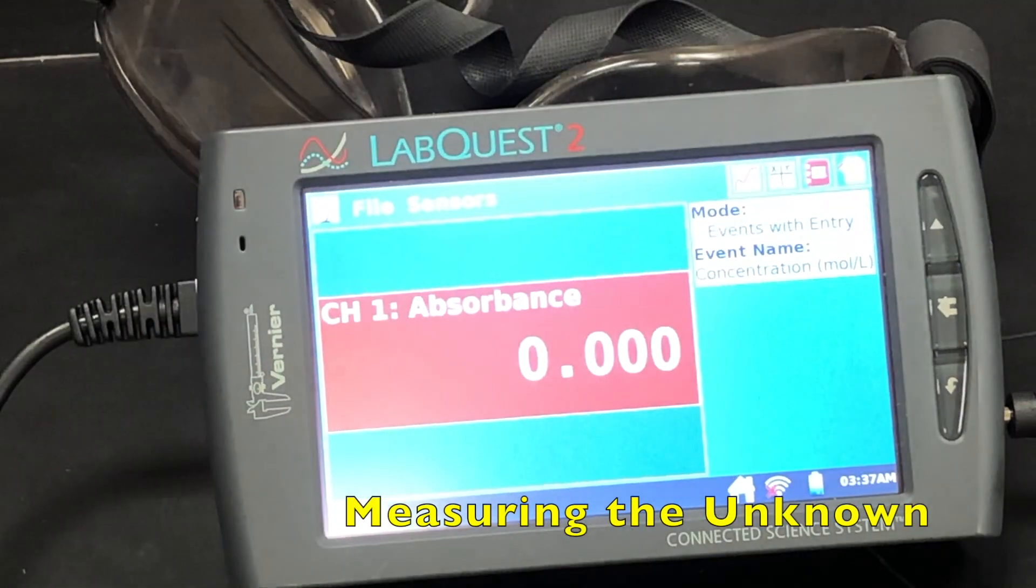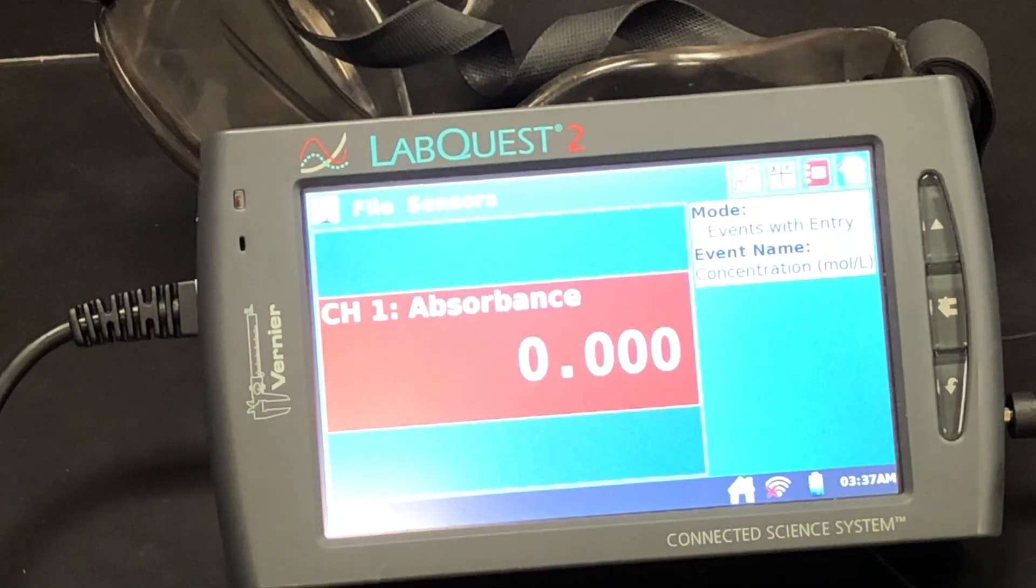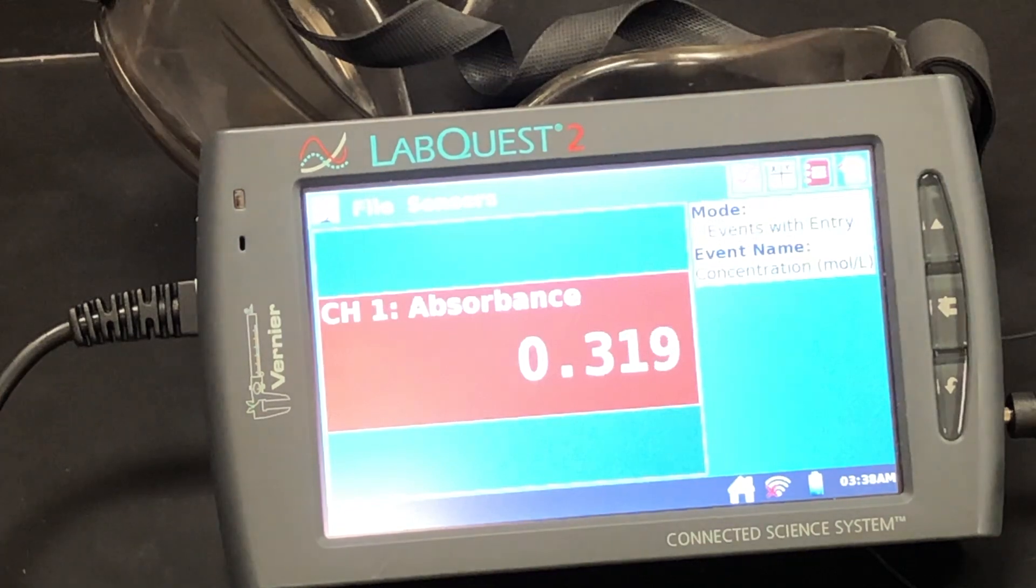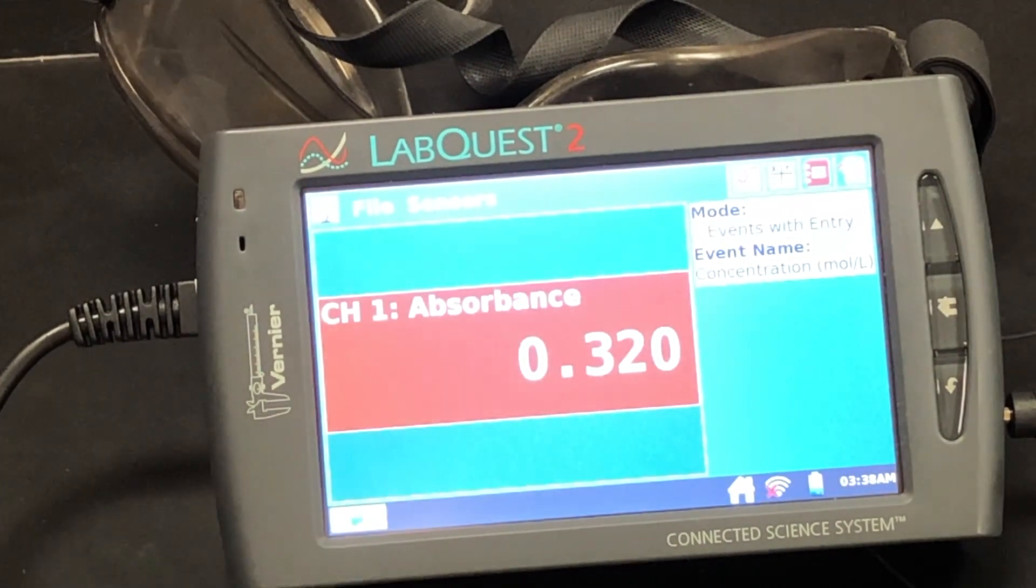And now it's time to measure the concentration of the unknown solution. We're going to put it in the colorimeter and measure the absorbance. Once the reading stabilizes, you take the absorbance reading, and then whatever the value is for that, that will be substituted into the line of best fit equation. So it looks like our reading is 0.320, and now we're going to use that to calculate the concentration of the unknown solution.